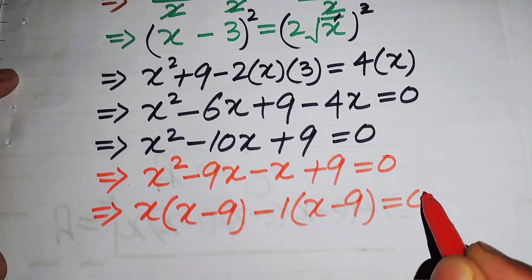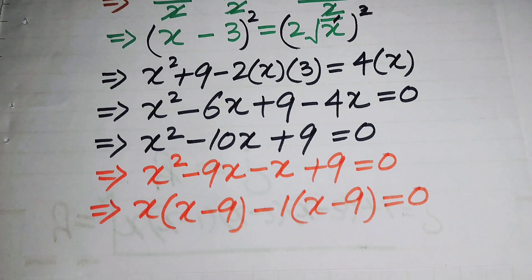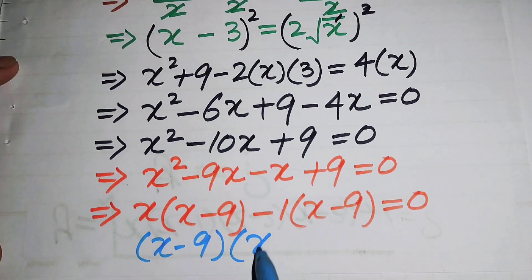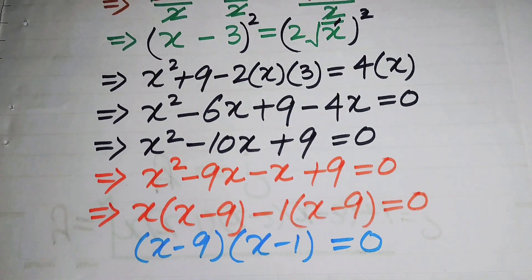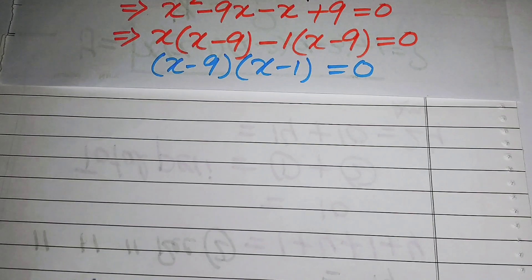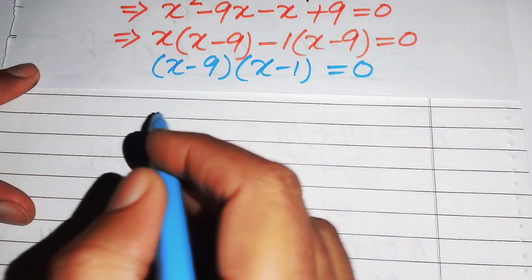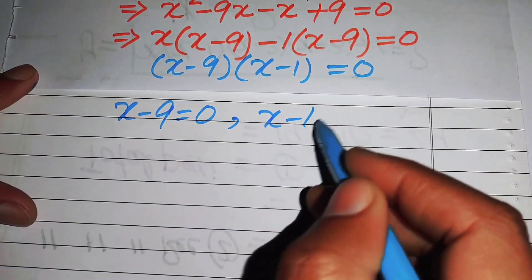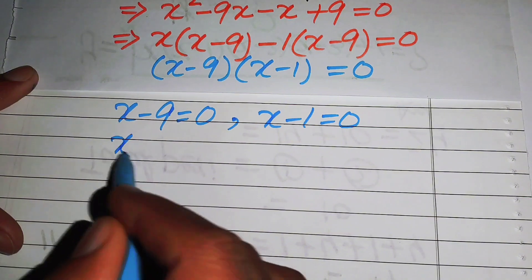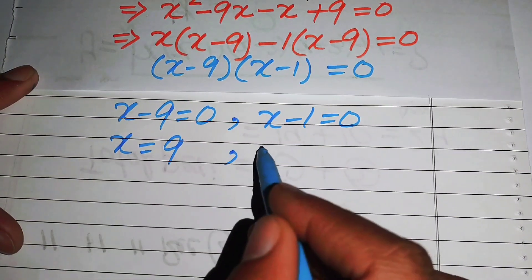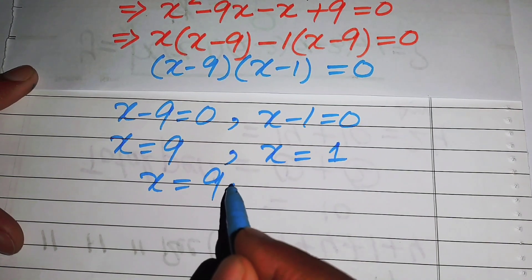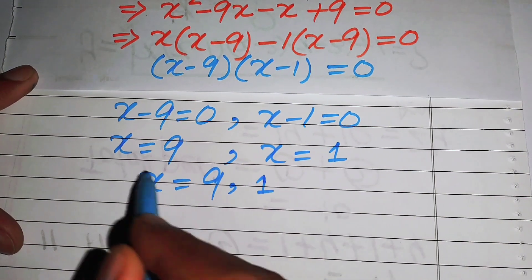Taking minus 1 common from the last two terms gives minus 1(x minus 9). Since (x minus 9) is a common factor, we write (x minus 9)(x minus 1) equals 0. This gives two cases: x minus 9 equals 0, so x equals 9, and x minus 1 equals 0, so x equals 1.